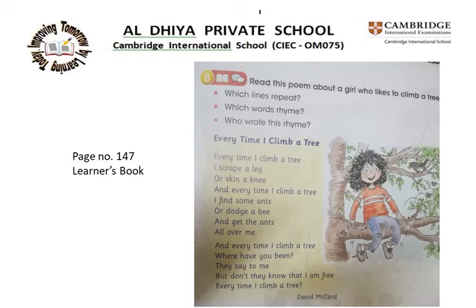The writer is David McCord. Now, which lines repeat? Which lines came again and again? 'Every time I climb a tree' — we say this line three times.